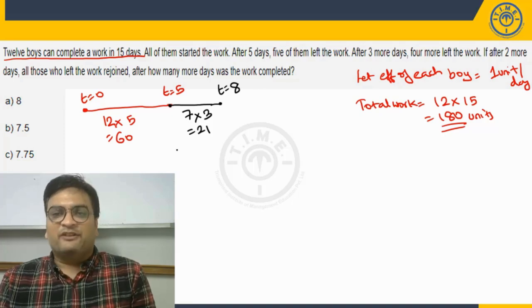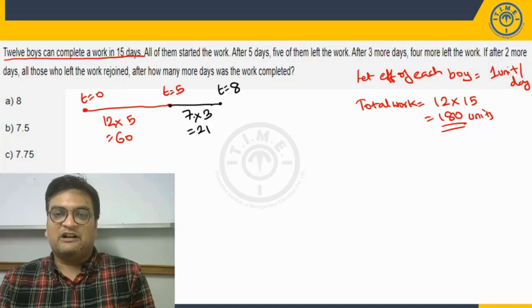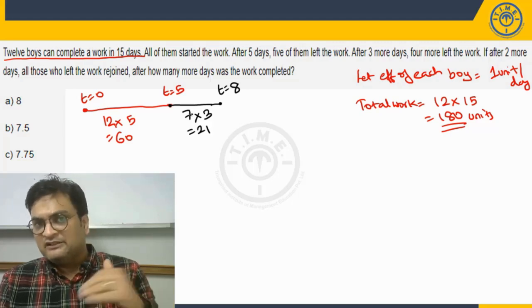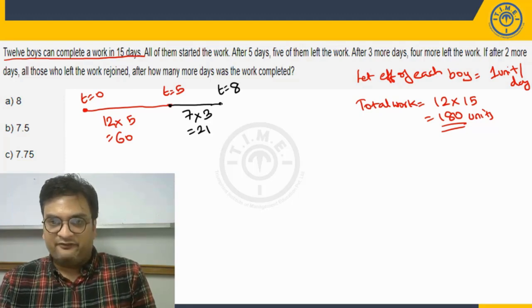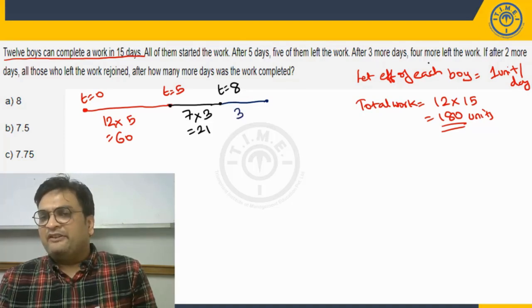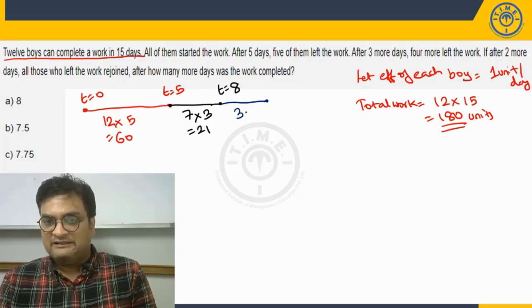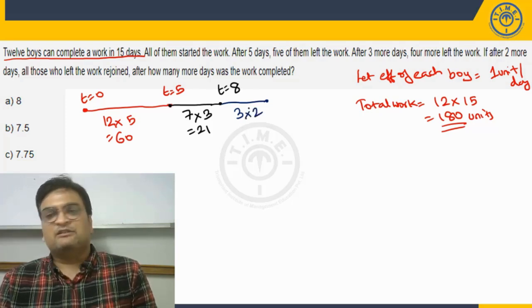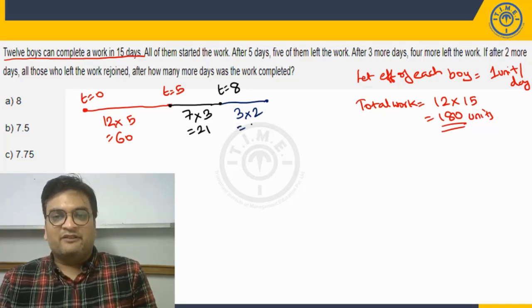And then he says after three more days, that is after eighth day overall, four more left the work. Now out of seven, seven people are working. Now if four more leave after this, can I say I will be left with three people. After three more days, four more people left the work. If after two more days, so this continued for two days like this, this violet blue zone. So here we would have done six units.